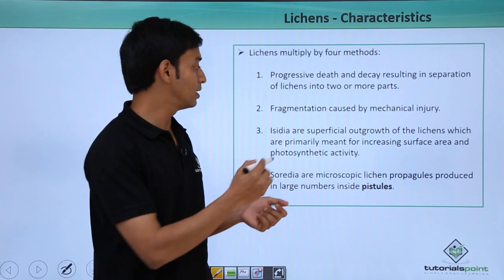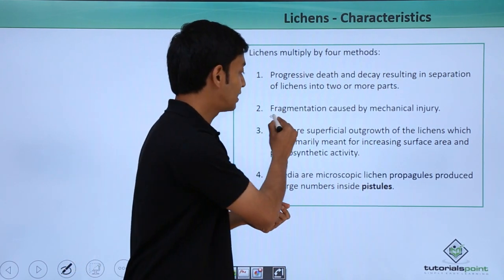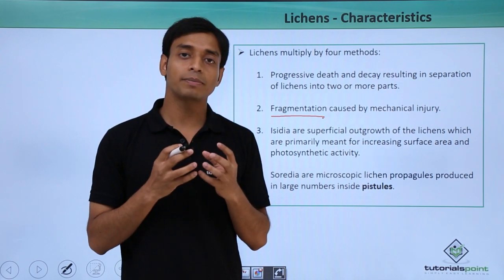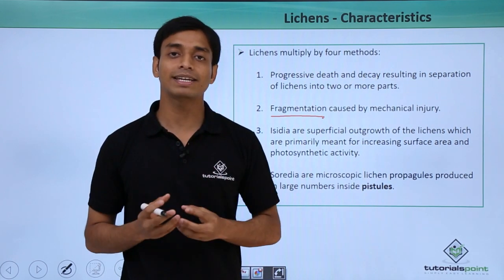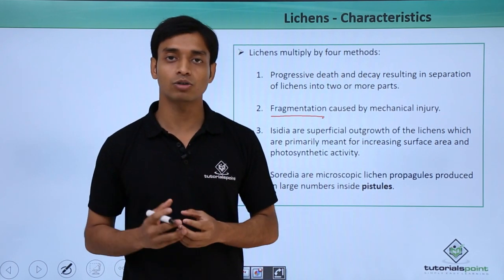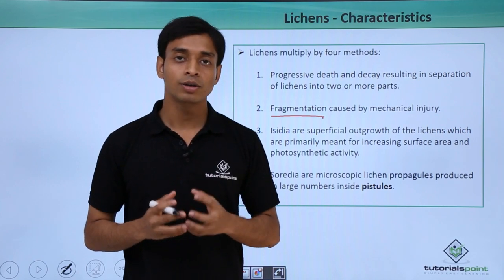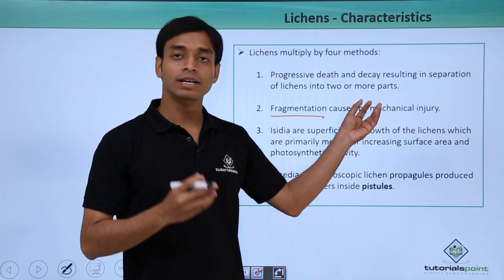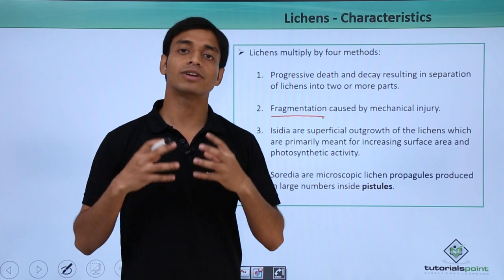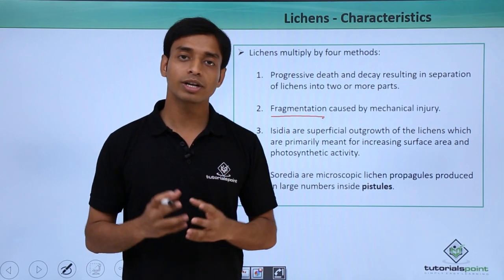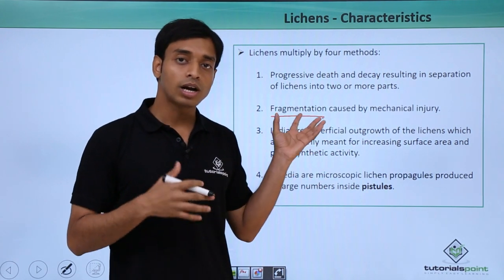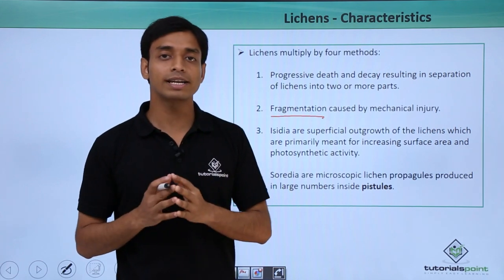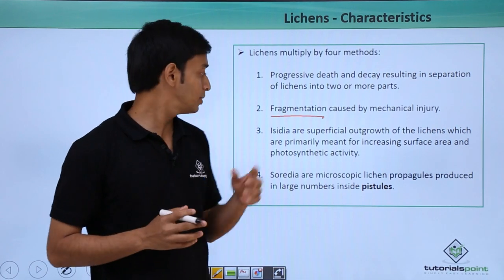A second method is fragmentation. Because of certain mechanical injury, parts of the lichens separate out from the parent organism. These separated, fragmented parts can give rise to a new organism. So due to fragmentation, the organisms can increase in number.